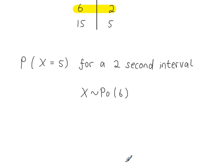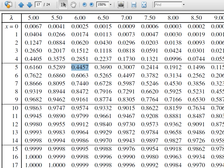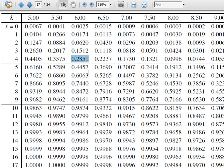Using the tables to find P(X = 5) with lambda = 6, we calculate P(X ≤ 5) minus P(X ≤ 4). With lambda = 6, P(X ≤ 5) = 0.4457 and P(X ≤ 4) = 0.2851.